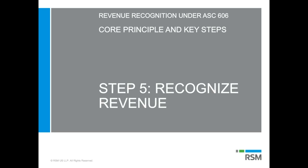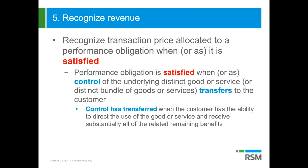We're moving on then to step five, where we're talking about actually recognizing the revenue at this point — the amounts that you've allocated to each performance obligation. That amount gets recognized as revenue when or as a performance obligation is satisfied.